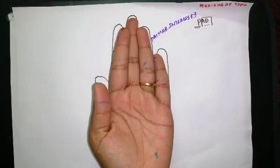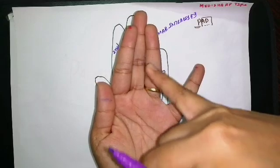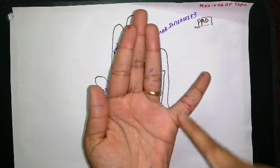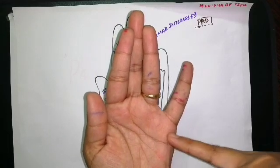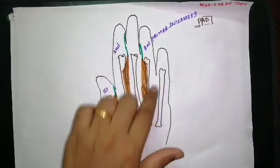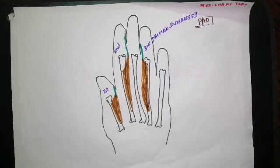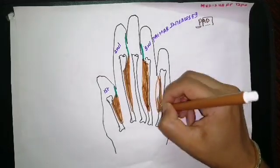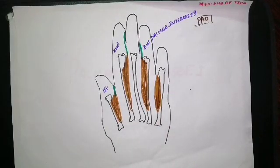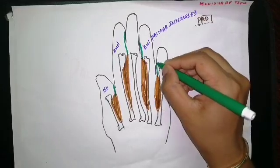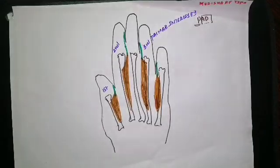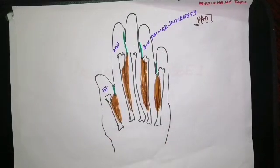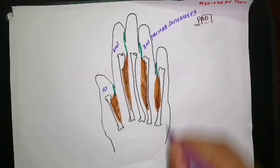Now look at the fourth Palmar Interosseus. It causes adduction of the little finger towards the central plane of the middle finger. To cause this movement, it originates from the lateral aspect of the base of the fifth metacarpal. It gets inserted into the dorsum of the base of the distal phalanx of the little finger through the dorsal digital expansion.